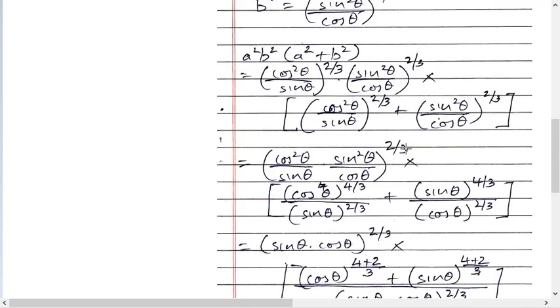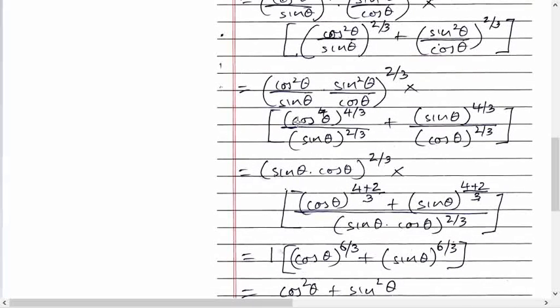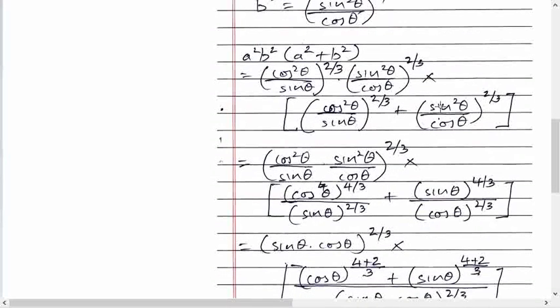The whole raised to 2/3. We'll focus only on this part now. Forget this bracket. What happens? Sine sine gone, cos cos gone. What remains is sine theta cos theta raised to 2/3. Keep it as it is. Now look at the bracket, what happens.